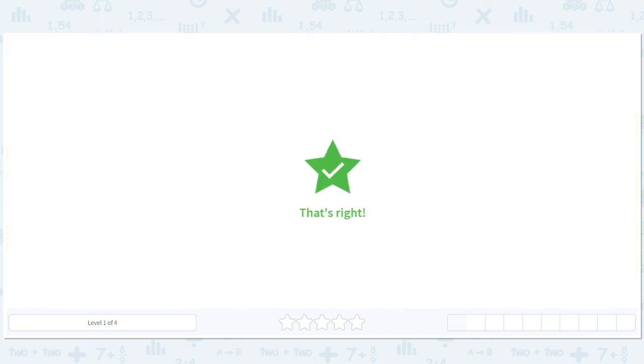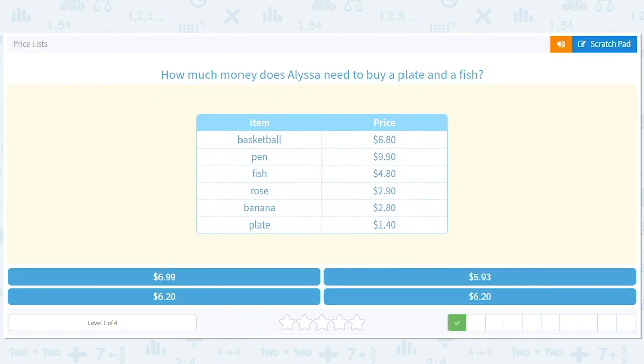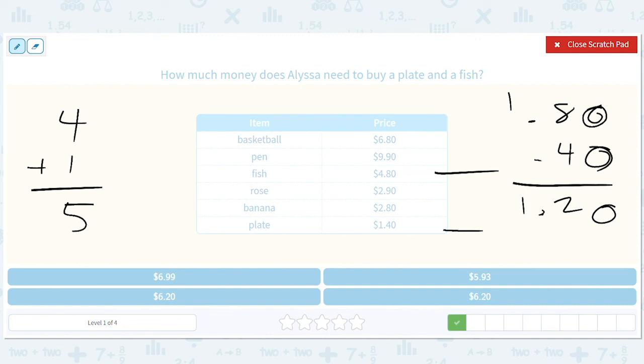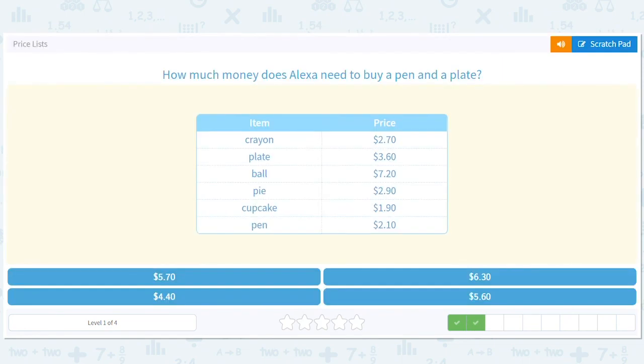How much money does Alyssa need to buy a plate and a fish? Let's do it a different way - four plus one to get five, just to change it up. Then 80 and 40, zero, two - that's twelve, one carried over. We line up the decimal, so that's a dollar twenty plus the five. Again, you could probably do this with mental math, which gives you six dollars and twenty cents.